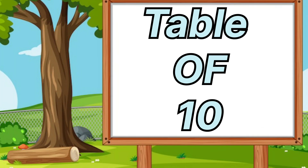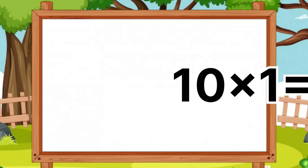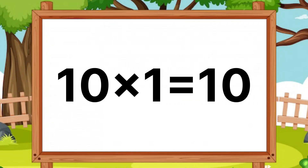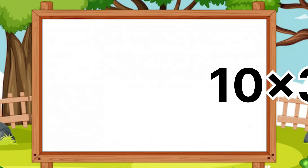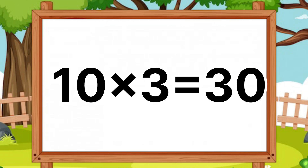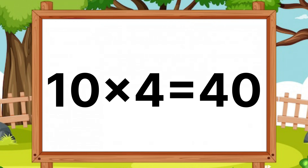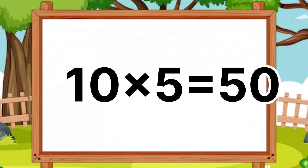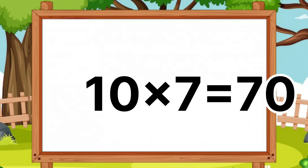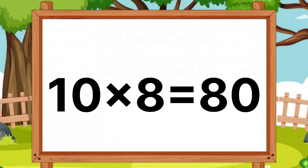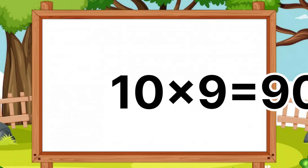Table of ten. Ten ones are ten. Ten twos are twenty. Ten threes are thirty. Ten fours are forty. Ten fives are fifty. Ten sixes are sixty. Ten sevens are seventy. Ten eights are eighty. Ten nines are ninety.